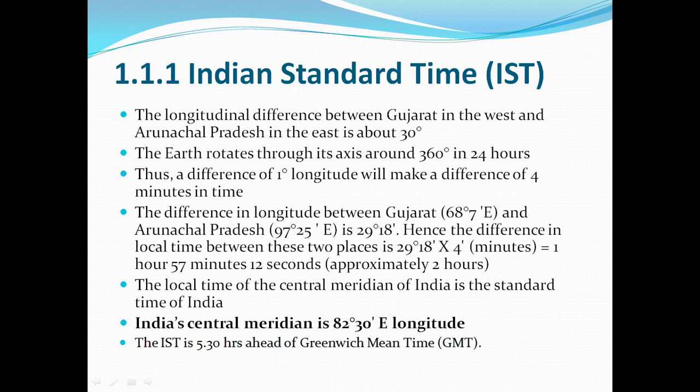Next we are going to look at the topic of Indian Standard Time. The longitudinal difference between Gujarat in the west and Arunachal Pradesh in the east is about 30 degrees. The Earth rotates on its axis around 360 degrees in 24 hours.